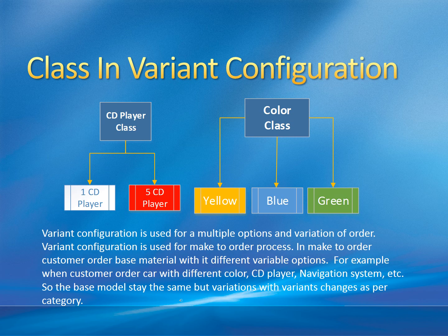For example, a color class has three variants: yellow, blue, and green. A CD player class has variants for one and five CD players. These classes get assigned to the car — the car being the base model — for variant configuration setup for the sales order.